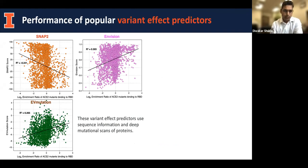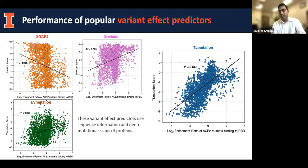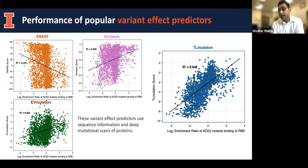Looking at these two approaches: when we tried existing variant effect predictors to predict ACE2 variant performance in binding the spike, performance was not promising — R-squared values were low for popular tools available on GitHub. Fortunately, we were simultaneously developing our own variant effect predictor, which we call TL mutation — transfer learning of mutations — which significantly outperformed popular predictors like EV mutation, InVision, and SNAP2.